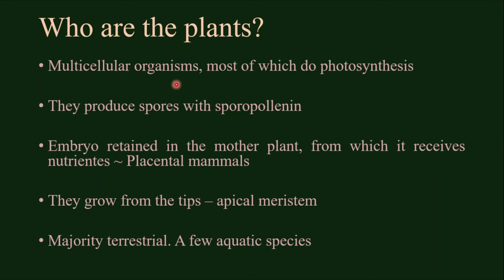Plants also do photosynthesis, a set of reactions that allows plants to produce the organic molecules they need. The spores of plants are coated with a substance named sporopollenin, which is the most resistant organic molecule in the world. It protects the spores from environmental adversities and attacks by microorganisms. The embryo of plants is retained in the mother plant for a while and receives nutrients from the mother plant. And plants grow from the tips — the tips of the stem and the tips of the roots — by the action of a tissue named apical meristem.